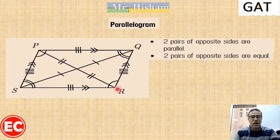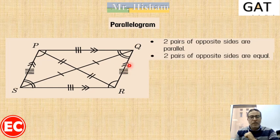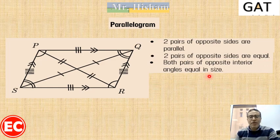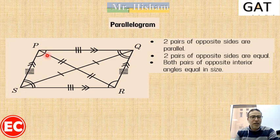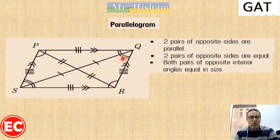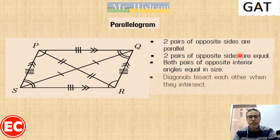Note that the tick marks indicate equal sides and the arrow marks indicate parallel sides. The third property is that opposite angles are equal in measure: angle Q equals angle S, and angle P equals angle R. As for consecutive angles like Q and R, their sum is 180 degrees — they are supplementary.